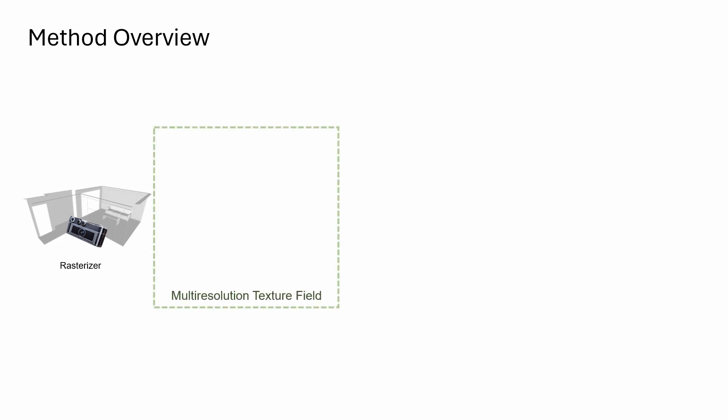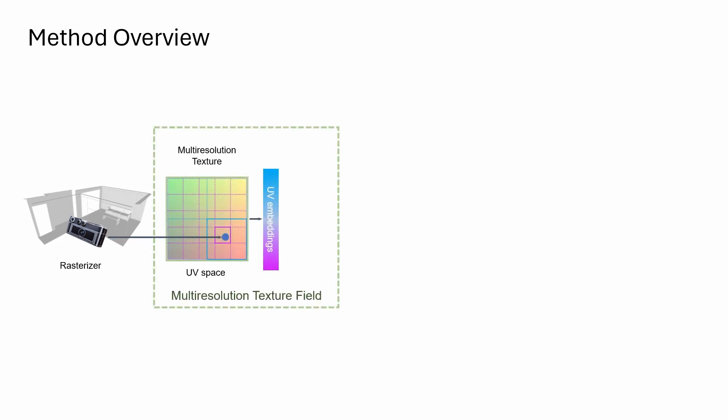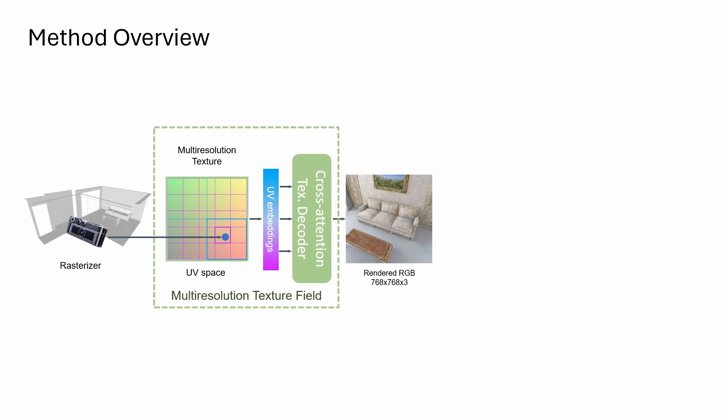For a given viewpoint, we obtain the UV coordinates from a multi-resolution texture. To tackle the challenges of style inconsistency and self-occlusion, we propose a cross-attention texture decoder to render the RGB image using the UV embeddings.